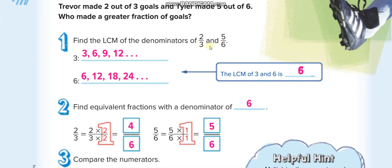First of all, we have to find the LCM of the denominators. The denominators are 3 and 6. We find their LCM, and the least common multiple of 3 and 6 is 6. Now we will change our denominators into 6. If you see the second fraction, it is already 6.